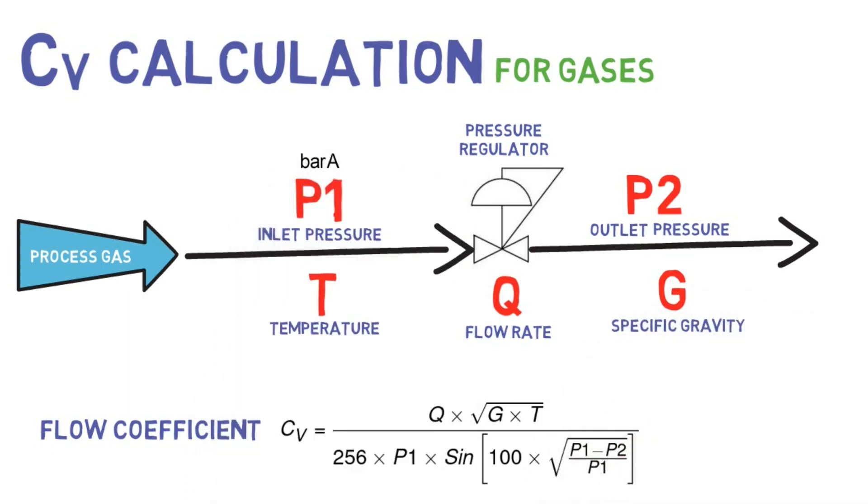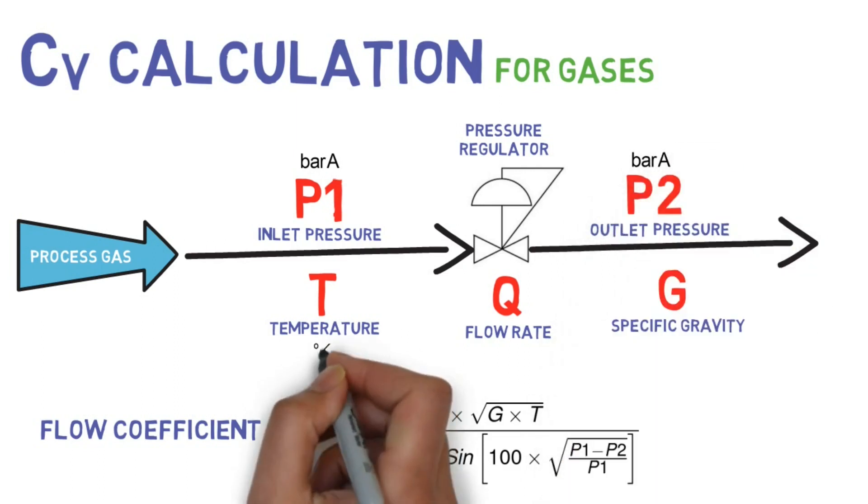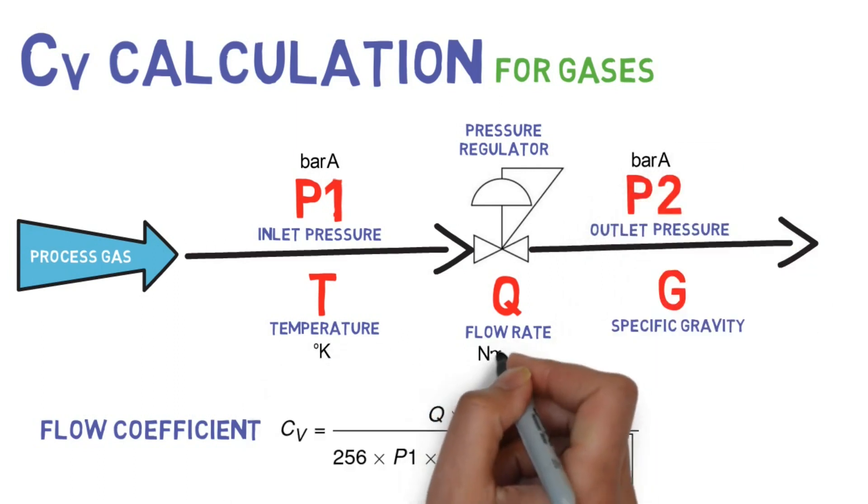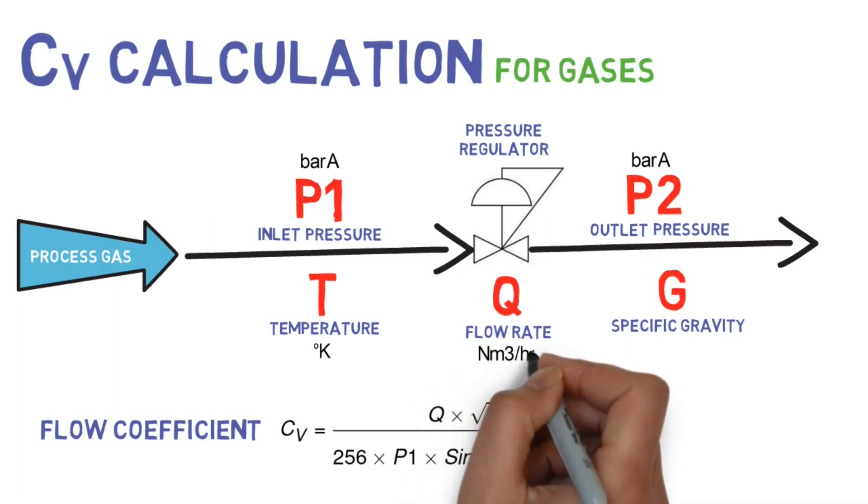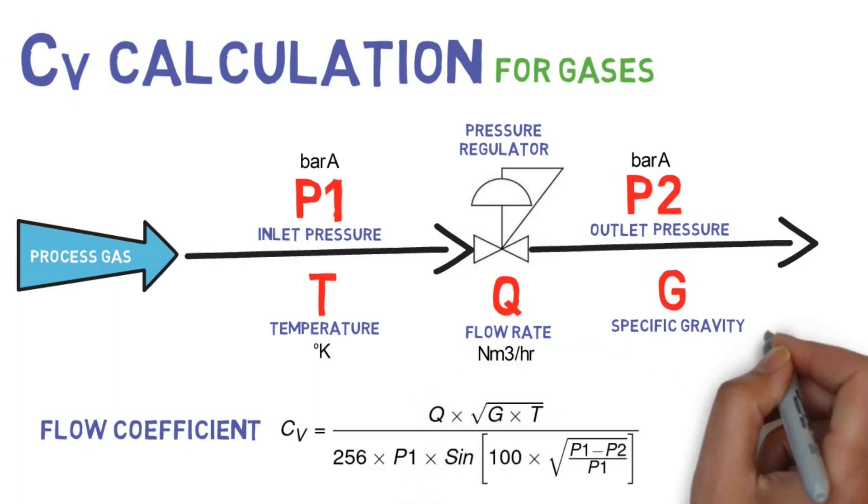Unit of pressure will be bar absolute. Unit of temperature will be Kelvin. Unit of flow will be normal cubic meter per hour. Specific gravity is the ratio between molecular weight of process gas and molecular weight of air.